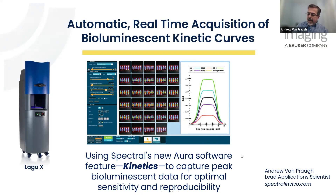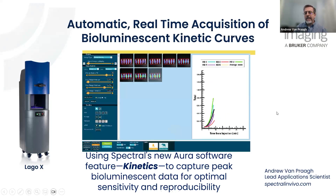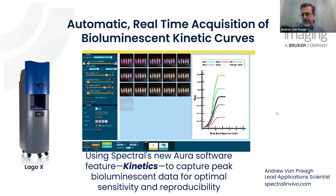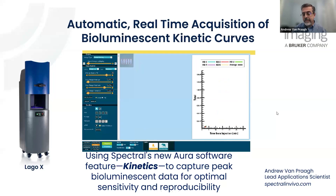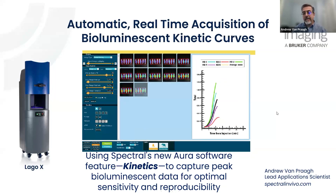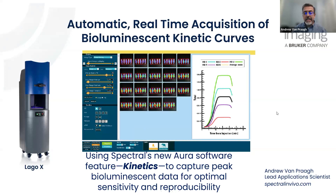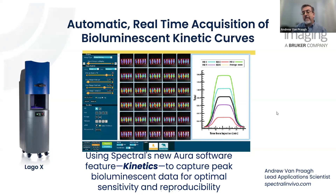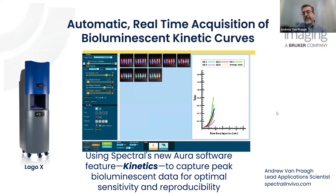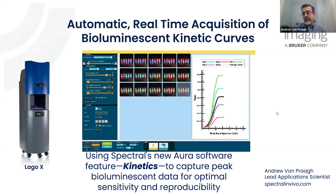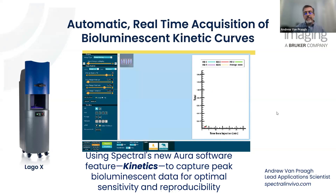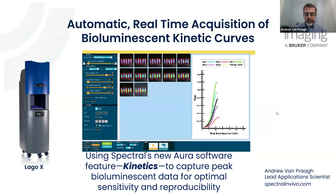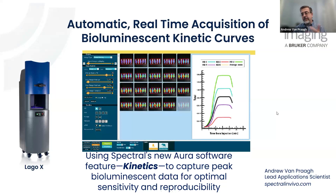With regard to bioluminescent imaging, the bioluminescent signal itself is a bit of a moving target. In any animal model system where you have to inject substrate to supply the luciferase enzyme, the amount of light that you get will be a product of the time post-injection of that substrate. Essentially, you're dependent on the pharmacokinetics of that substrate as it passes through the animal, finds the cells that are expressing the luciferase, and then generates the light.